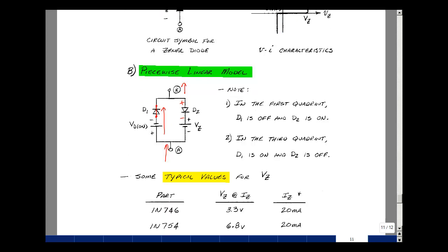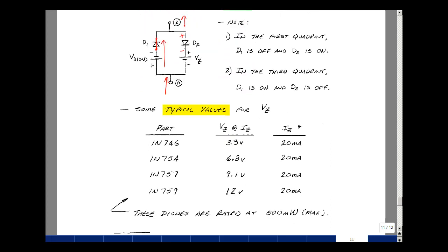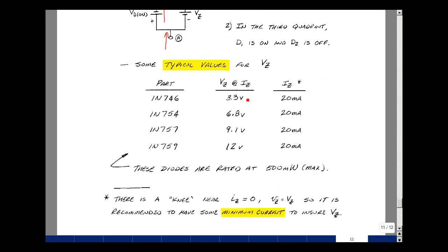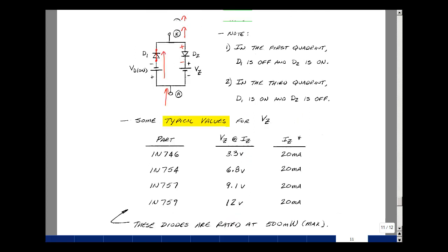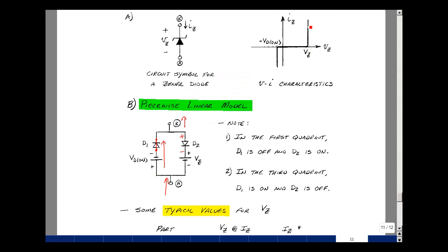Now what are some typical values for a Zener diode? I've listed some parts here: a 3.3 volt Zener, 6.8, 9.1, and a 12 volt Zener. Because there's a curve that's continuous here with a soft corner, not two straight lines.